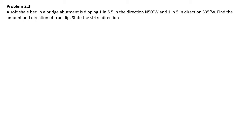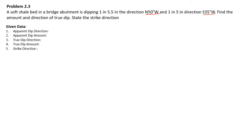Problem 3: A shale bed in a bridge abutment dips at 1 in 1.5 — which is 1 is to 1.5 — in a direction north 50 degrees west, and 1 in 5 in a direction south 35 degrees west. Find the amount and direction of true dip. The given apparent dip directions are north 50 west with 1 is to 5.5, and south 35 west with 1 is to 5. We have to find the true dip direction, amount, and strike direction.